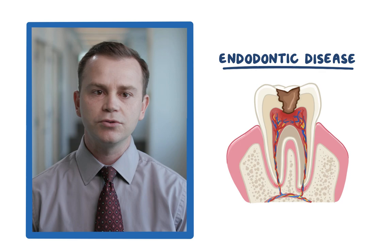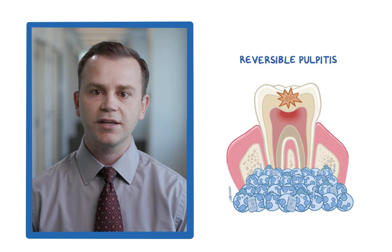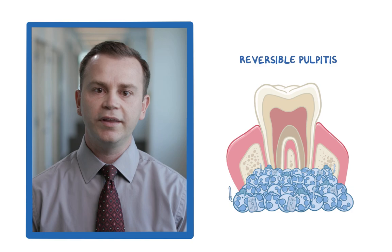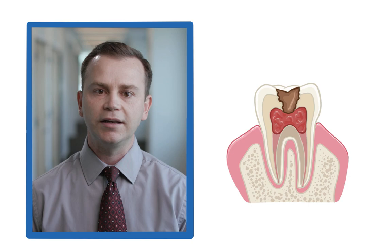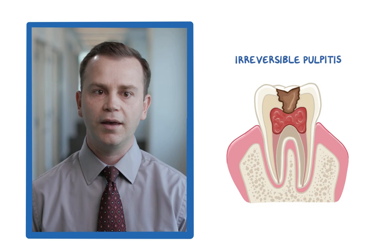In reversible pulpitis, the pulp can mount an immune response and recover from short-term insult by shunting away the excess fluid. When the injury is severe or persists, because the pulp tissue is enclosed in a low-compliant space, there is no room to expand and the pressure continues to build until the vessels collapse, leading to tissue damage. This condition is called irreversible pulpitis.